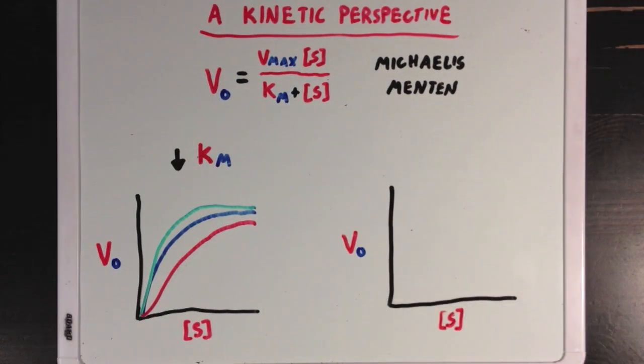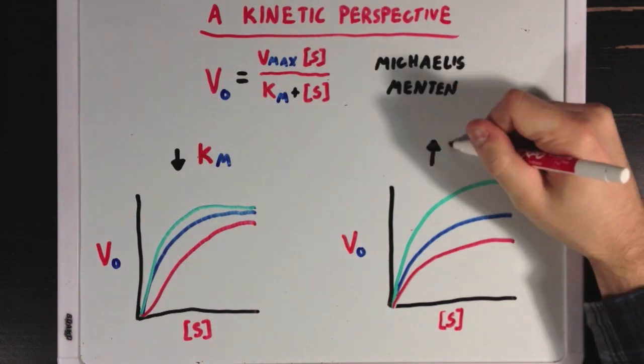Now, in this next example, we have the same three colored curves, but instead of KM changing significantly, the regulators seem to be changing Vmax, with the activator increasing the Vmax value.